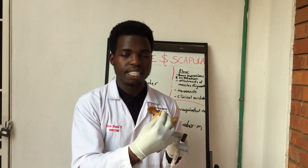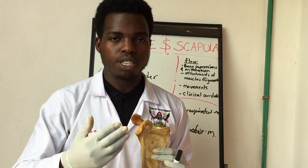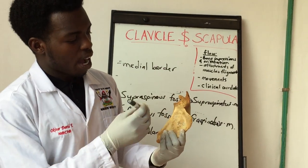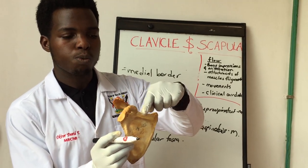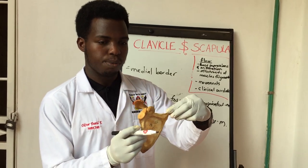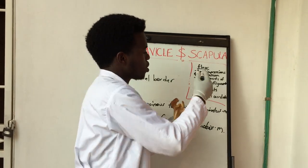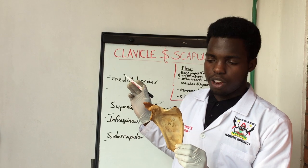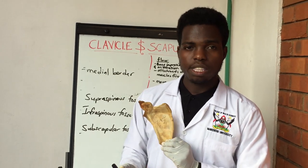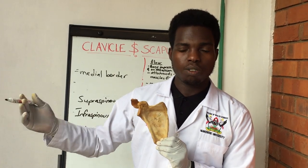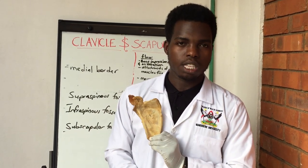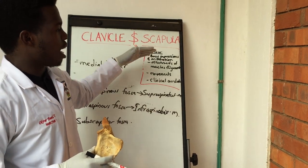The superior border extends to give rise to the coracoid process, which acts as an attachment for some muscles of the arm. The superior border and the medial border meet at the superior angle of the scapula. To orient this bone: the medial border is medial, the lateral border is lateral, and the spine is located posteriorly. The glenoid cavity faces laterally, making this the right scapula.